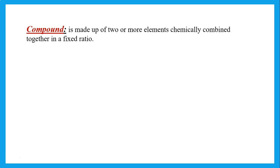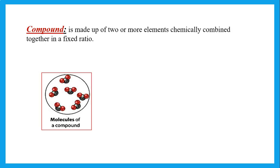Now, what's a compound? A compound is a substance made up of two or more elements chemically combined together in a fixed ratio. So if we have different elements that are chemically combined together — since they are two or more atoms combined together, that's called a molecule — these are molecules of a compound because they are made up of different elements that are chemically combined together.